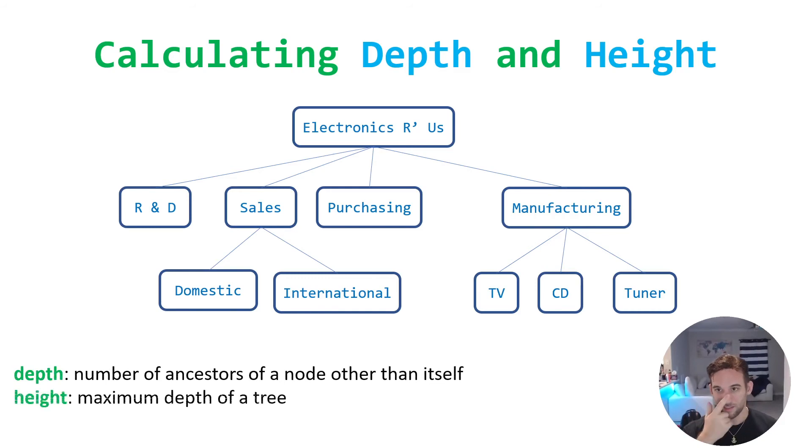So I'm going to revisit one more time calculating the depth and the height. If we take a look at depth again, it's number of ancestors of a node other than itself. So ancestors are all the nodes above the node we're looking at that are connected to it. So let's look at another different one. Let's look at TV. So TV has two ancestors: manufacturing and Electronics R Us. So we would say depth of TV equals two. And let's see what we could do. Let's do sales. So we can say the depth of sales, please don't mind my terrible handwriting with PowerPoint, depth of sales is equal to one. Cause you don't look at the node itself, you just look at all the ones above it. And that's what that means.